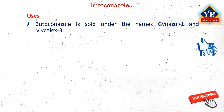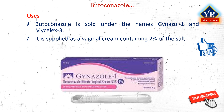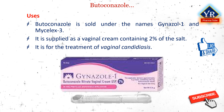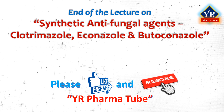Butoconazole is sold under the trade names Gynosol-1 and Mycelex-3. It is supplied as a vaginal cream containing 2% of the salt, intended for the treatment of vaginal candidiasis. Butoconazole nitrate is active against many dermatophytes and yeasts, especially for the treatment of vulvovaginal infections caused by Candida species, particularly Candida albicans. It also has antibacterial effects against some gram-positive organisms. That's all in this video on synthetic antifungal agents. In the next video we will discuss some other synthetic antifungals. Till then, never stop learning. Thank you for watching.